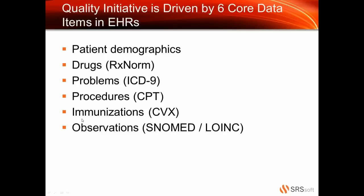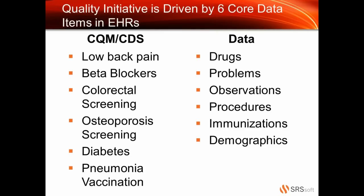There are six pieces of data — there's no seventh category. Right now for Meaningful Use Stage 2, they're still on the same six categories. If someday they come up with a seventh category for Stage 3, we will obviously expand our data model to accommodate that. These six drive all the programs — e-prescribing, PQRS, Meaningful Use — they're all driven by these data elements. Looking at the different quality measures and clinical decision support rules, every single one of these clinical quality measures is driven by those six data points.